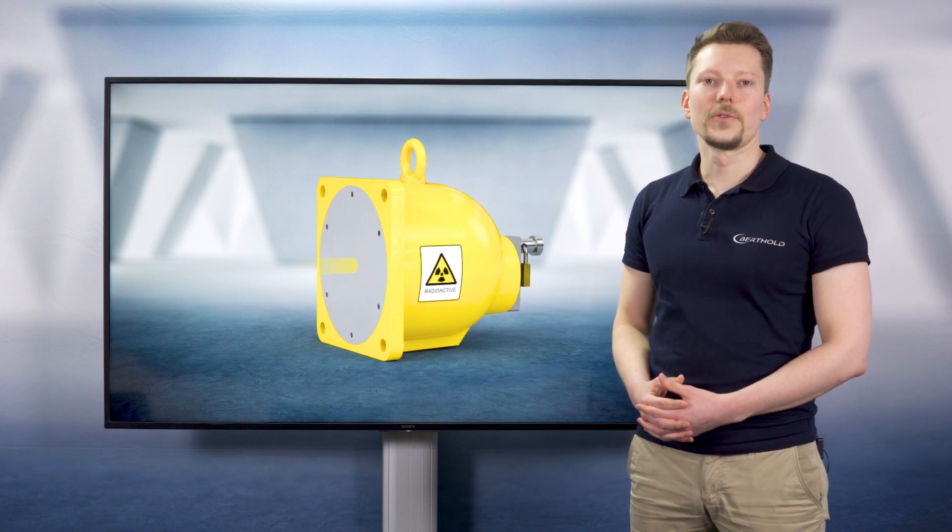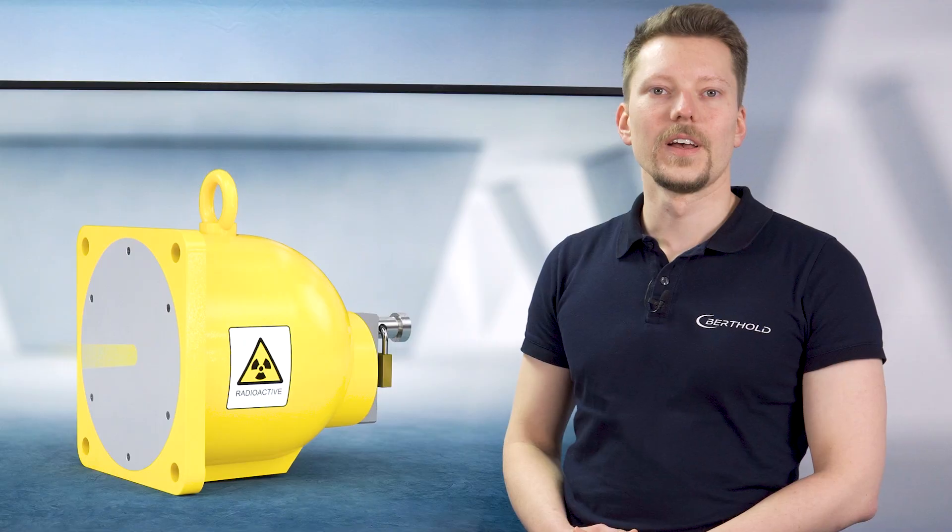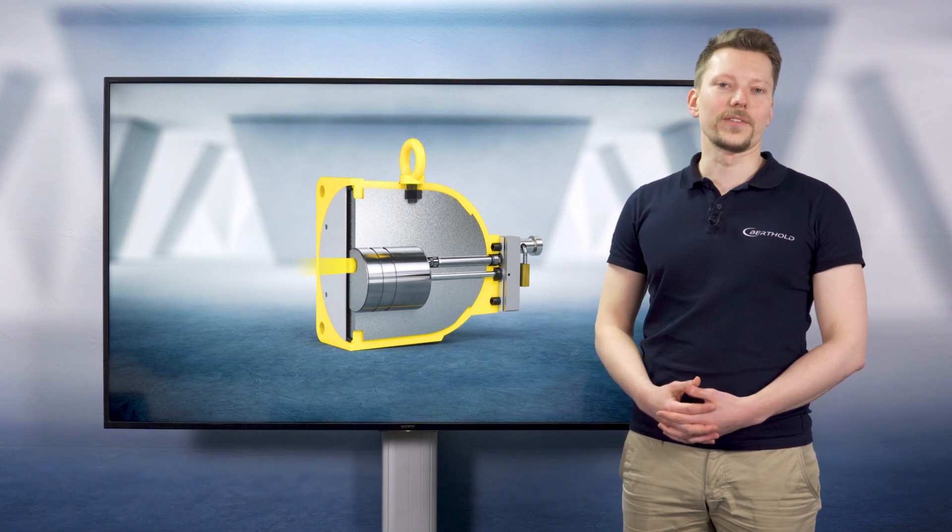Shield designs differ from application to application but consist overall of the same components. The housing of a shield protects the inside from mechanical damage or weather influences. It is filled with a shielding material which is lead for most cases.